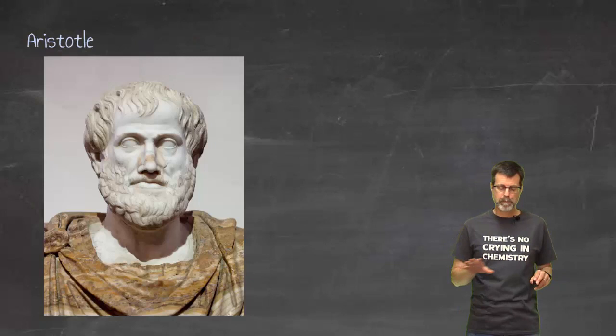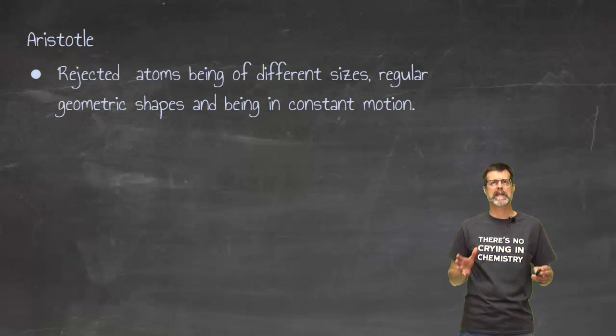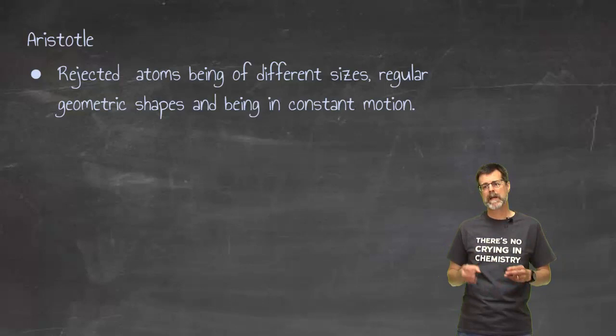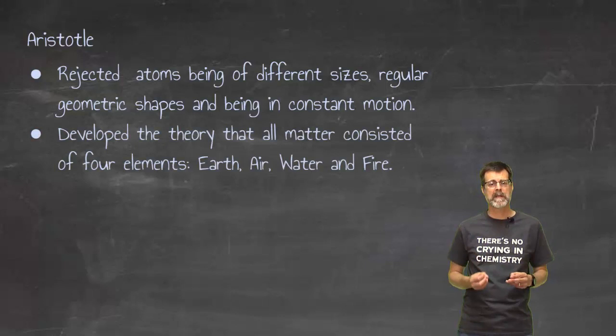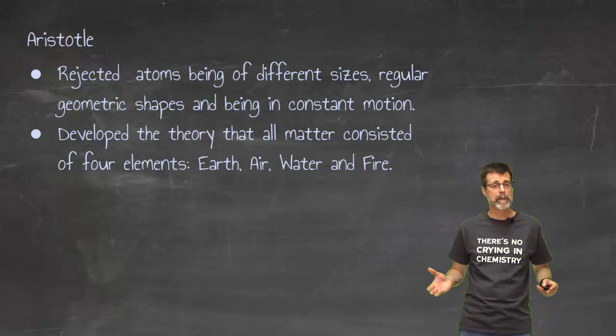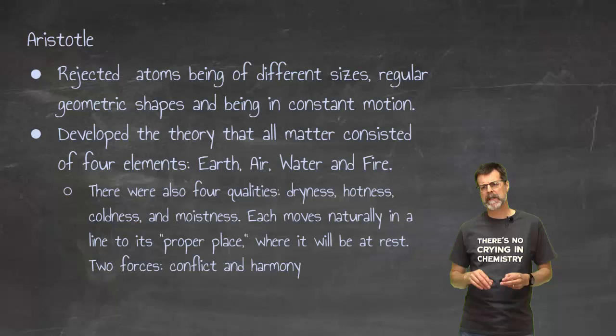That idea was challenged and rejected by Aristotle. Aristotle had more an idea that it wasn't so much individual particles that could not be broken down, but he was more into the idea of different characteristics. When he talked about the elements, he wasn't thinking about the periodic table of the elements.